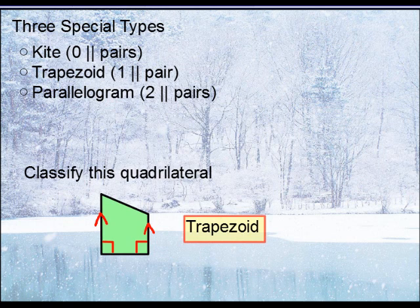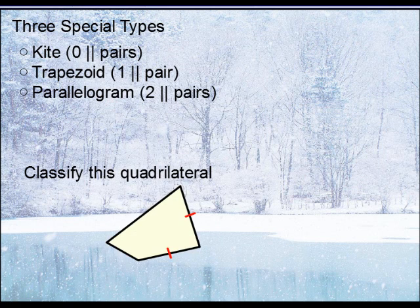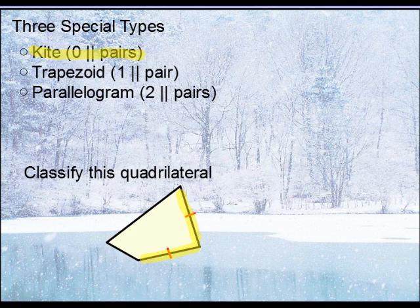Let's look at another four-sided figure. You will note that none of the sides are parallel. We do have one pair of sides that are congruent, but we don't have a second pair. Because of that, we couldn't say that it's a kite. So if it's none of these three special types, you would simply call it an ordinary quadrilateral.